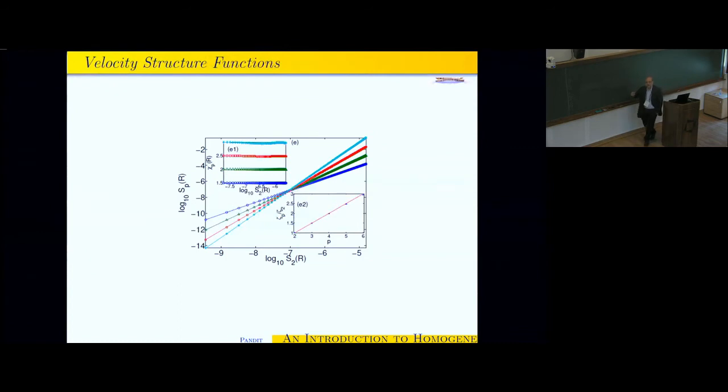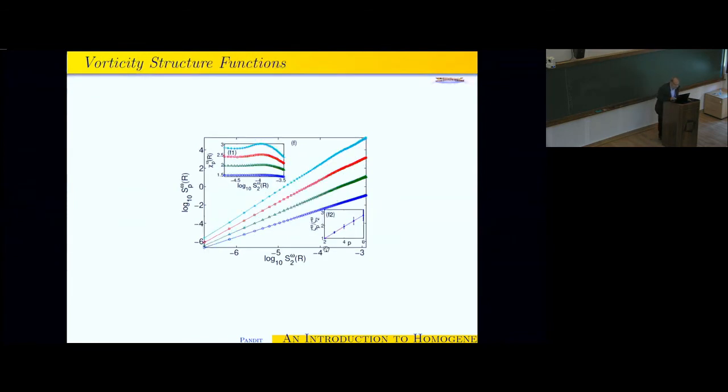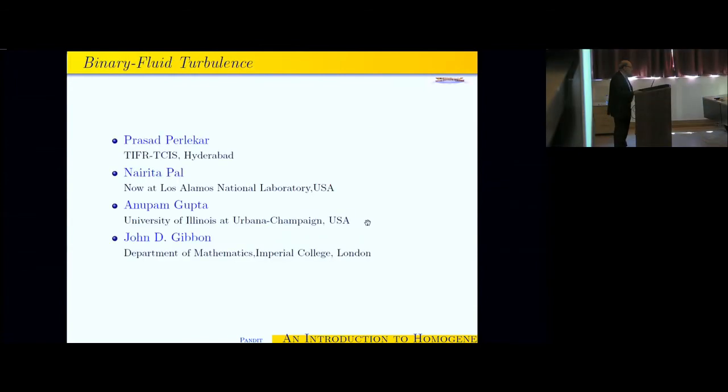And then by looking at the behavior, the dependence of these structure functions on the separation r, you can begin to calculate the exponent zeta p that I told you about. So I show you such plots for the forward cascade part, where the enstrophy is going forward in two dimensions. And from the slopes of these plots, you get a plot in the inset of a scale zeta p versus p. And there seems to be a straight line, so as far as anyone can tell, at least within numerical error, the velocity structure functions in two dimensions do not show multi-scaling.